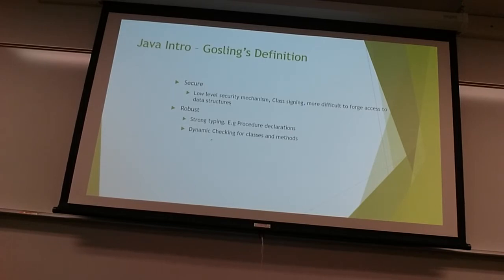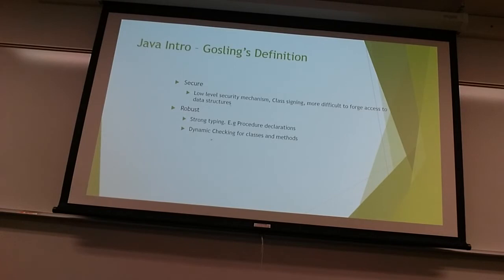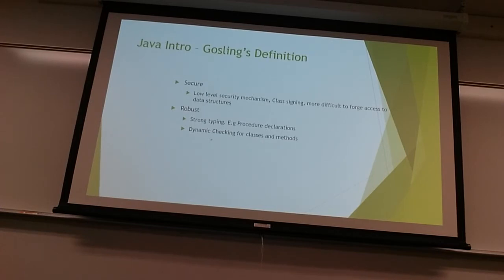In C++, when you write a subprogram you have to first declare it and then write the details. In Java we don't do that — we just write the subprogram. There is also dynamic checking for classes and methods, meaning if I'm going to execute a method in my program, the runtime environment will dynamically check whether that method exists, and if it doesn't, it will search the directories where the Java code is. Dynamic checking means while the program is running, it checks for classes and methods.